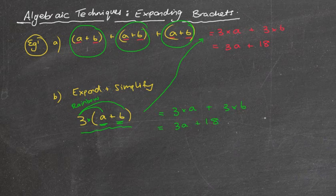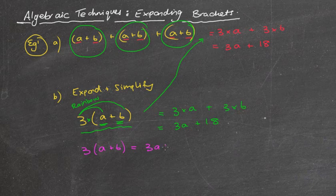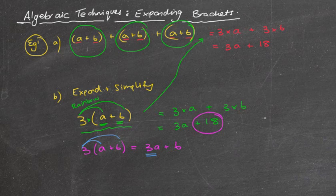Now, the biggest problem, or the biggest mistakes I see when they get a question like 3a plus 6 is people give the answer of 3a plus 6, not 3a plus 18. So what do you think they've forgotten to do? Well, they've done the 3 times a, which is excellent, but they haven't done the 3 times 6, which you can see is a big problem. So that answer is a big no-no.